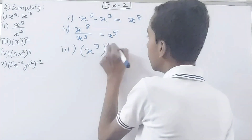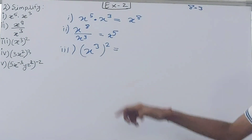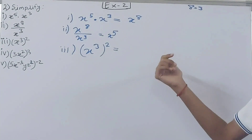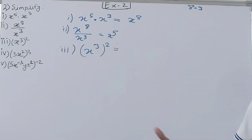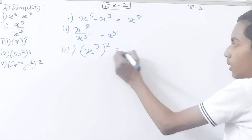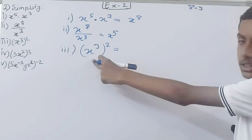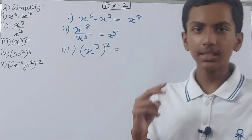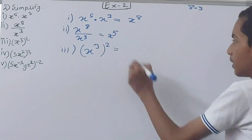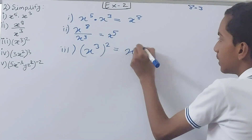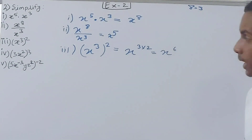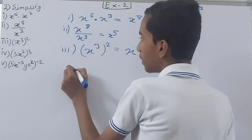Next is x to the power 3, whole raised to the power 2 — pronounced as 'x raised to the power 3, whole raised to the power 2,' or 'x raised to the power 3, whole square.' There is one base and two exponents, so in this case we multiply the exponents: x to the power 3 into 2, which is x to the power 6.